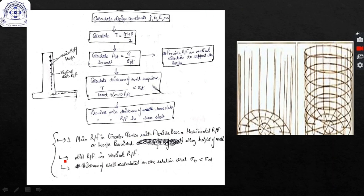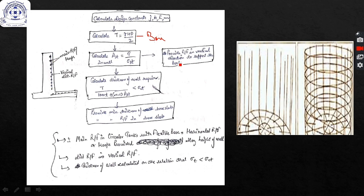To summarize the design procedure for circular tank with flexible base: first calculate design constants M, K, J, R. Then calculate hoop tension T = gamma·h·D/2, which is maximum at the base. Calculate main reinforcement Ast = T / sigma_st, assume bar diameter, and calculate spacing. Provide minimum reinforcement in vertical direction to support the hoops.